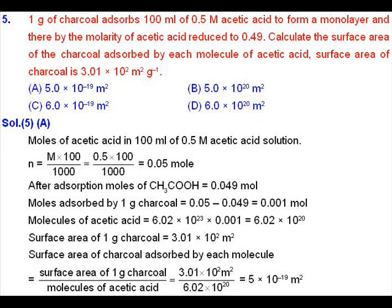We are going to discuss question number 5 from MTP4. Here it is given that 1 gram of charcoal absorbs 100 ml of 0.5 molar acetic acid and forms a monolayer. In this process, the molarity of acetic acid is reduced to 0.49. We have to calculate the surface area of charcoal absorbed by each molecule of acid, and the surface area of charcoal is given.